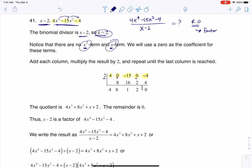So here we go. Big question is, am I going to get a 0 at the end of this? So bring down the 4. 2 times 4 is 8. 0 plus 8 is 8. 2 times 8 is 16. Negative 15 plus 16 is 1. 2 times 1 is 2. 0 plus 2 is 2. 2 times 2 is 4. Negative 4 plus 4. Sure enough, it is 0.